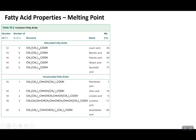Let's talk about the physical properties — specifically melting points. Looking at saturated fatty acids listed in increasing carbon number, as mass increases, the melting point also increases. This is consistent with what we've seen when discussing intermolecular forces: heavier compounds have higher melting or boiling points. So for saturated fatty acids, more carbons means a higher melting point.